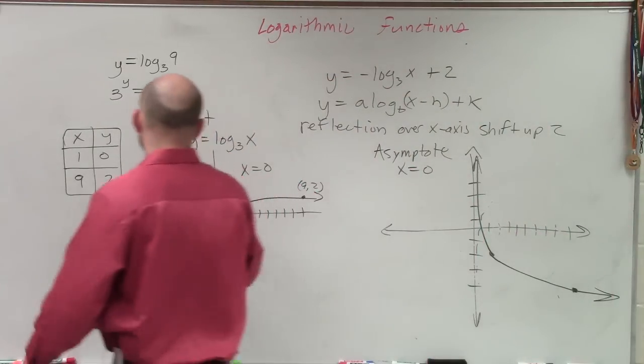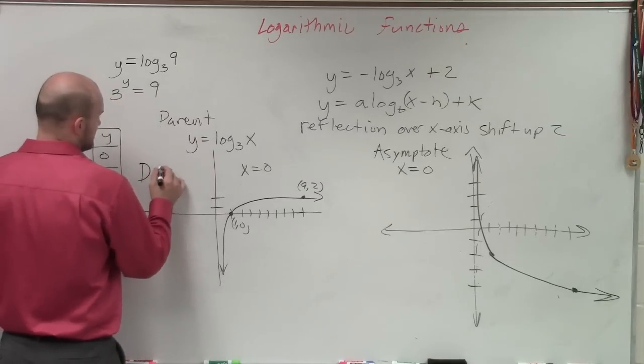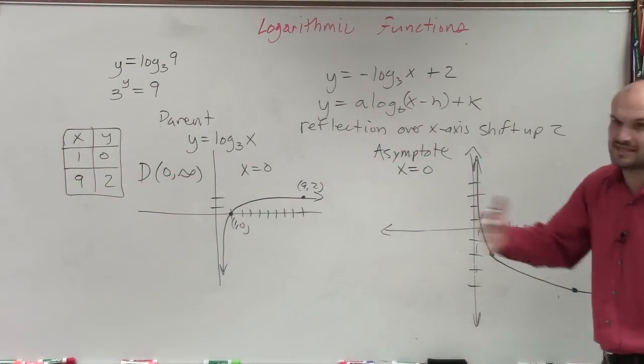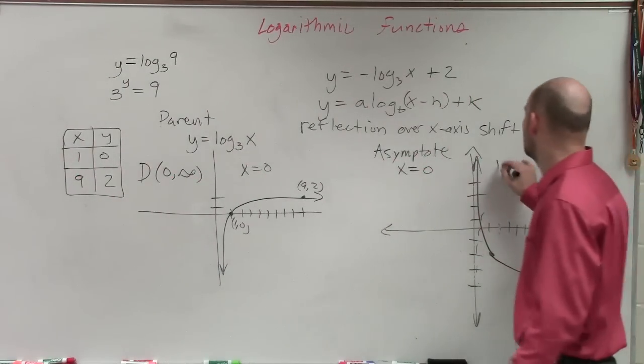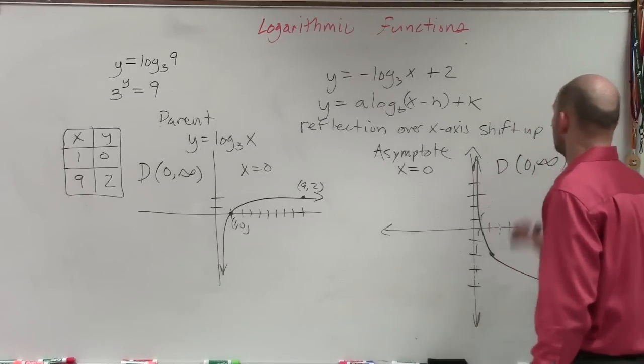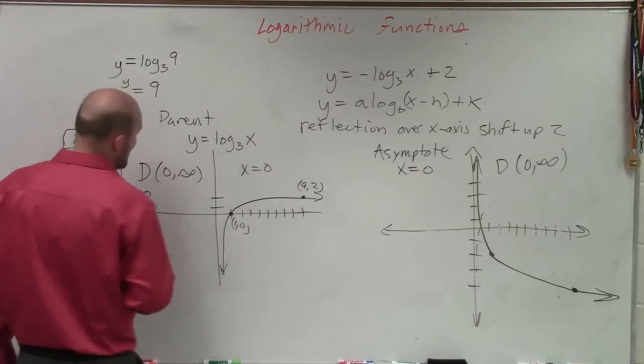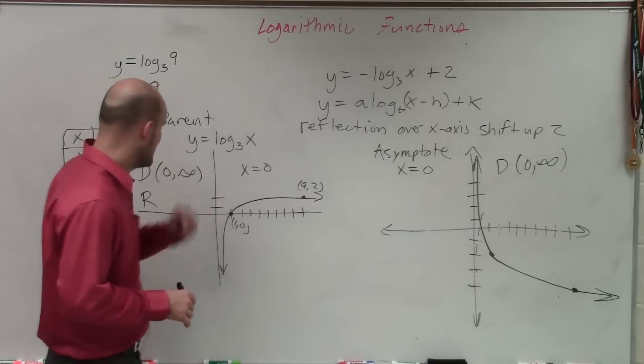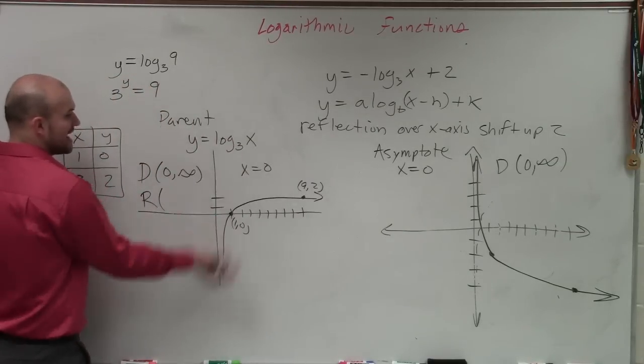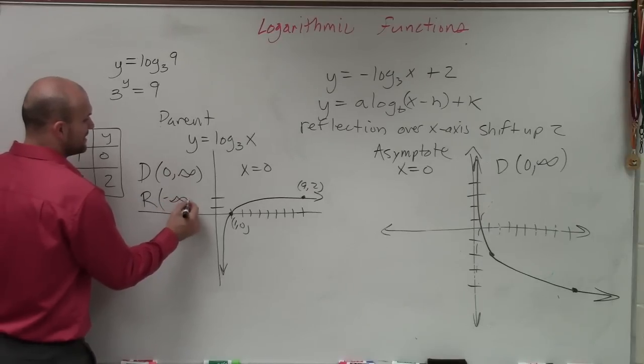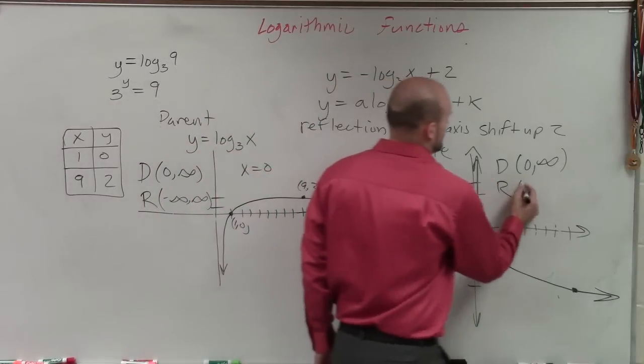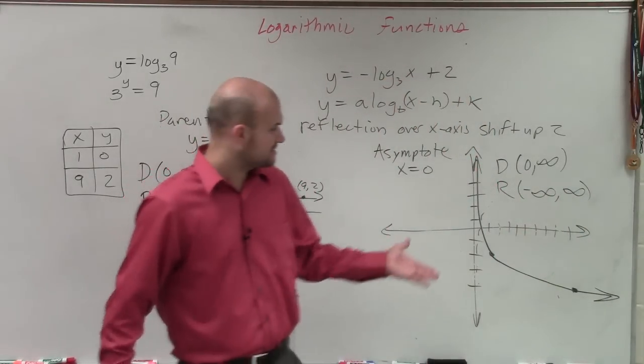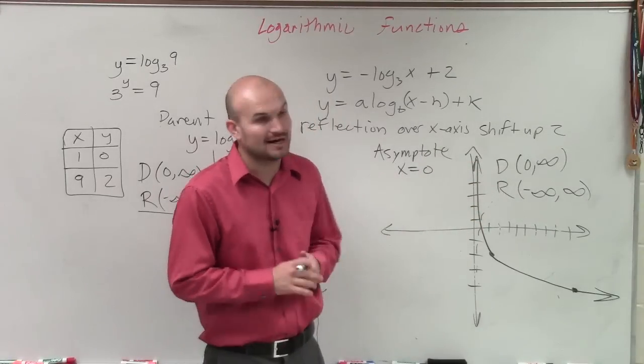Then remember the domain of the parent graph here is from 0 to infinity. That was in your notes for the parent graph. Well, now my domain, it's still going to be the same. I haven't changed it left or right. So domain is going to be from 0 to infinity. But the range is dependent on where the—the range is going to be not dependent on the asymptote at all. So that's going to be negative infinity to infinity. And the range over here is going to be from negative infinity to infinity. So that's a rough approximation of your graph and how to use it.